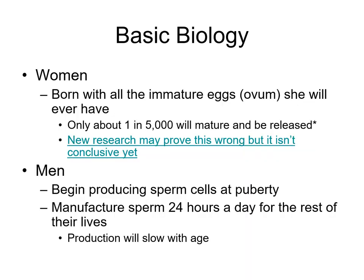Basic biology: men begin producing sperm cells at puberty and can manufacture sperm 24 hours a day for the rest of their lives, slowing production in their 60s. Women have been thought to be born with all of the immature ovum or eggs they will ever have, and only about 1 in 5,000 will fully mature and be released. There is new research that may prove this wrong, but it isn't conclusive yet.